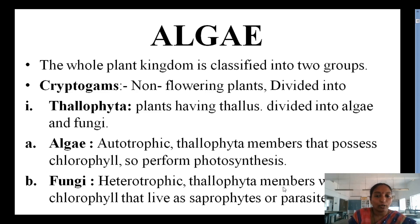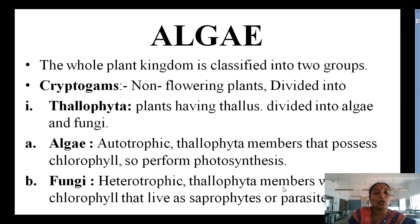What are Algae? They are autotrophic Thallophyta members that possess Chlorophyll. When Chlorophyll is present, they can perform Photosynthesis by the pigment present in the Chloroplast. These are Autotrophs, meaning they can synthesize their own food material. The plant body is Thallus-like, and they possess Chlorophyll for Photosynthesis.